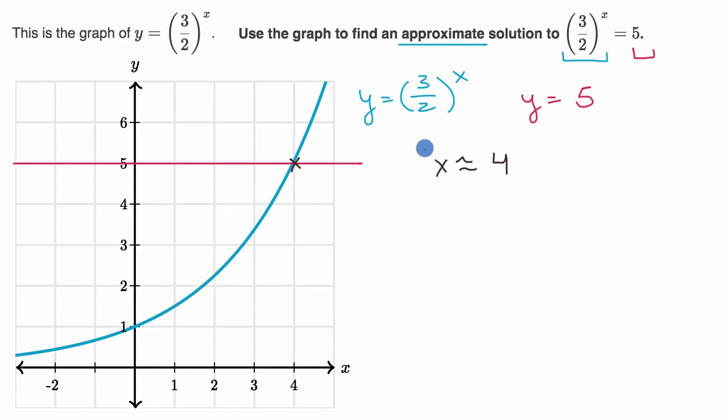And if we wanted to, we'd be done at that point. But if you wanted to, you could try to test it out. You could say, hey, does that actually work out? 3 halves to the fourth power, is that equal to 5? Let's see, 3 to the fourth is 81, 2 to the fourth is 16. It gets us pretty close to 5. 16 times 5 is 80, so it's not exact, but it gets us pretty close.